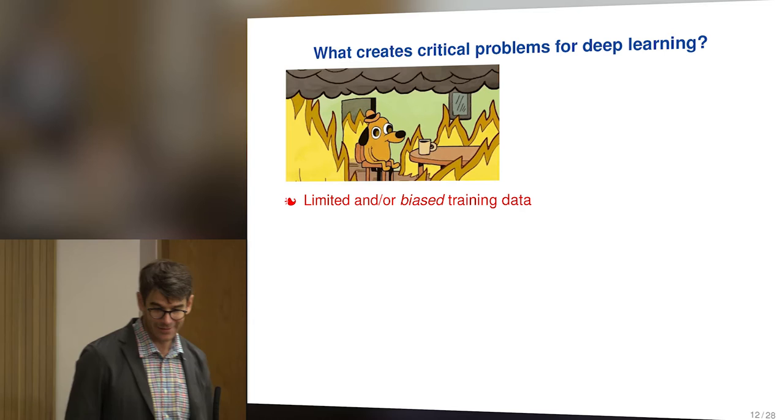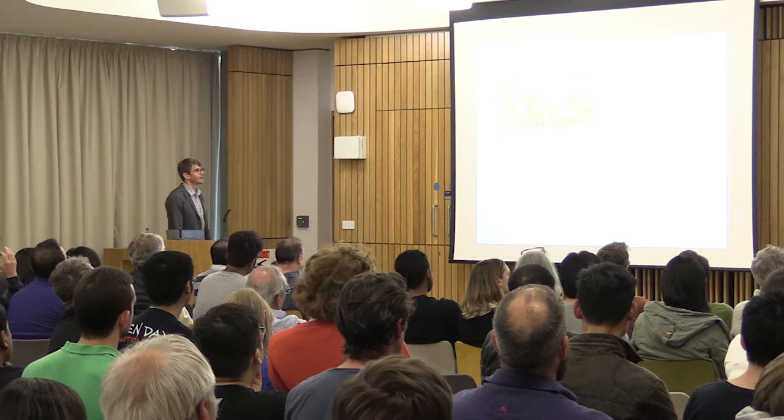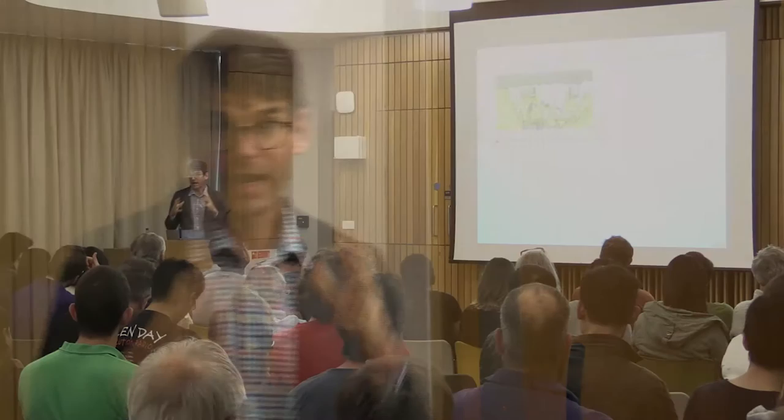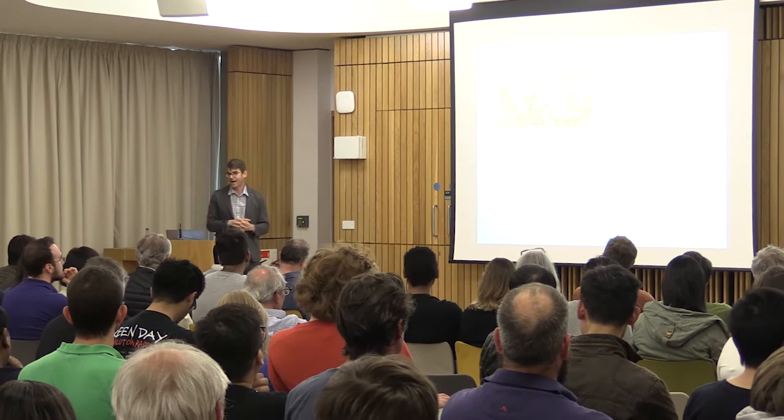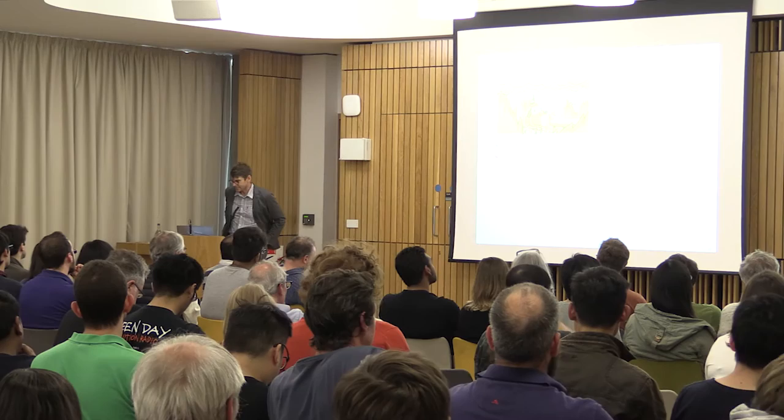What creates critical problems for deep learning? I want to transition into science and policy. Certainly limited or biased training data is a big one. A lot of people jump in and know how to use TensorFlow, they know how to fit deep neural networks or other machine learning algorithms, and think they can solve medical problems or other problems — just scrape a bunch of data, get a bunch of healthcare records, and apply it. But not thinking carefully about the selection method where the data is collected can get you really bad results.